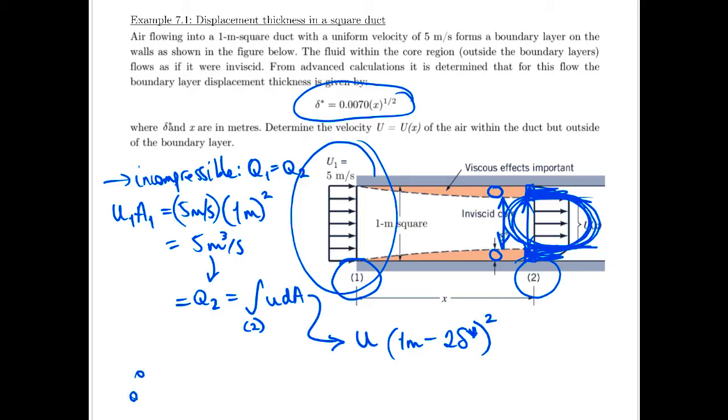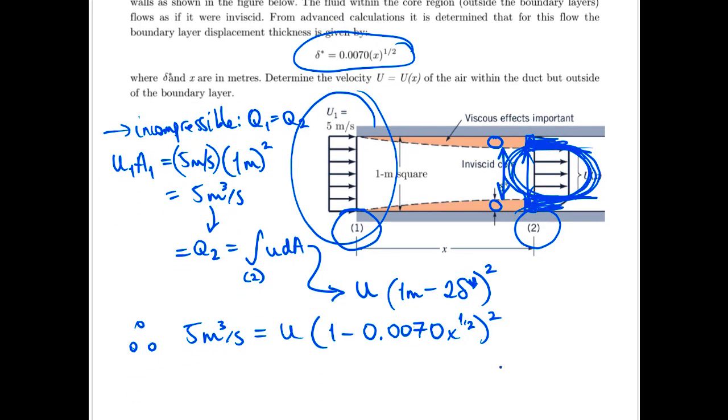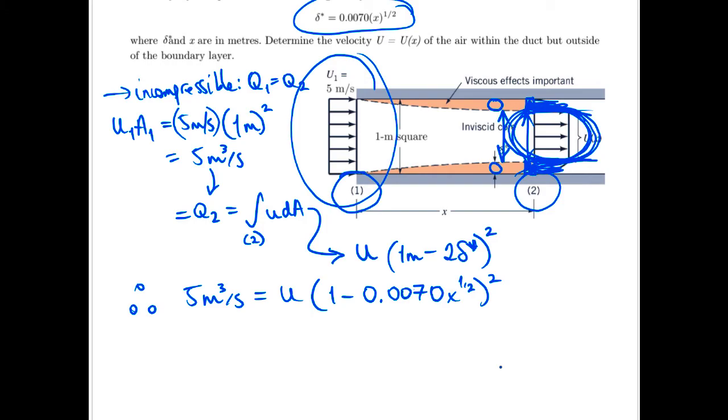And then we can say therefore our volumetric flow rate, which we know is five meters cubed per second, is going to equal U times one minus the equation for delta star. So we sub that all in there.